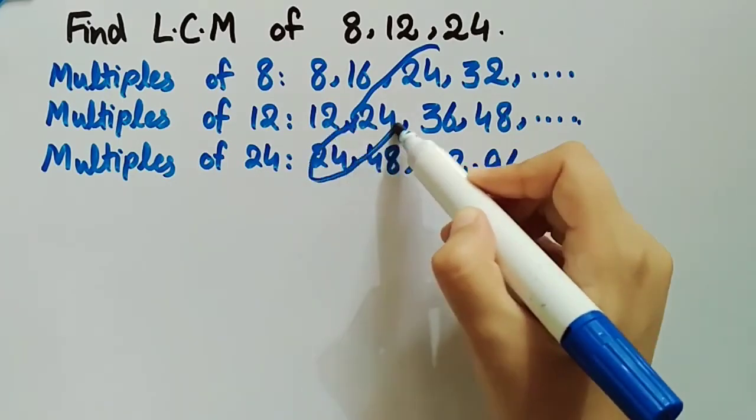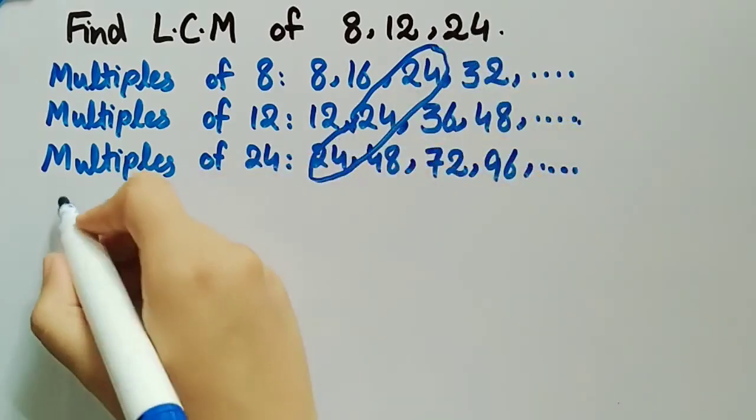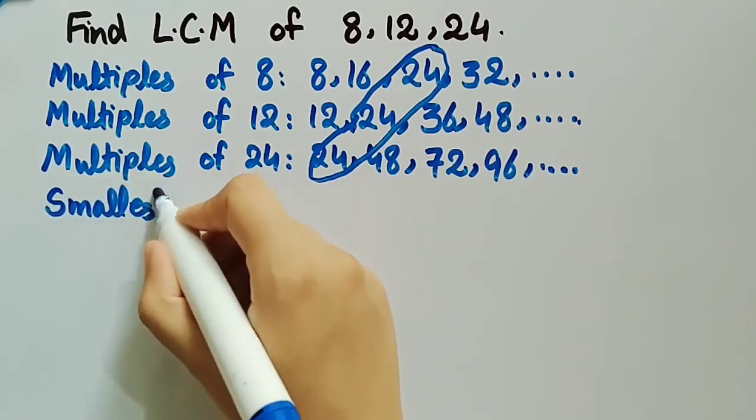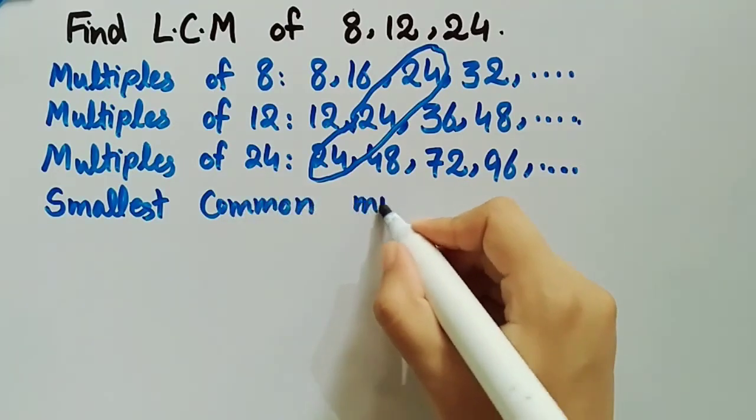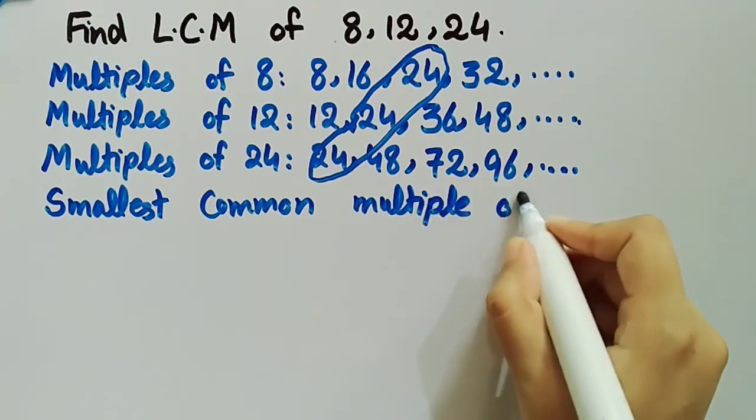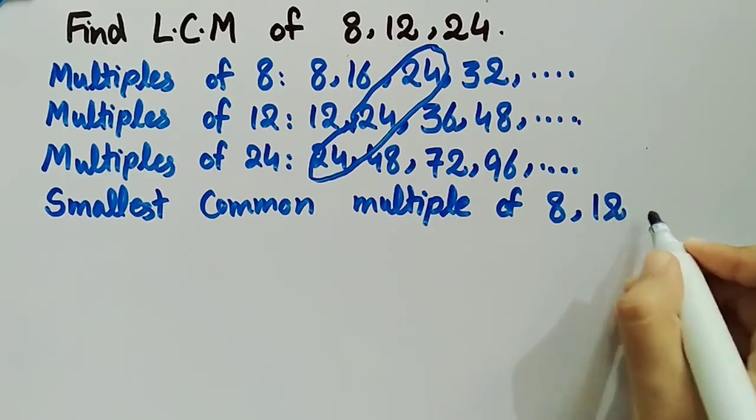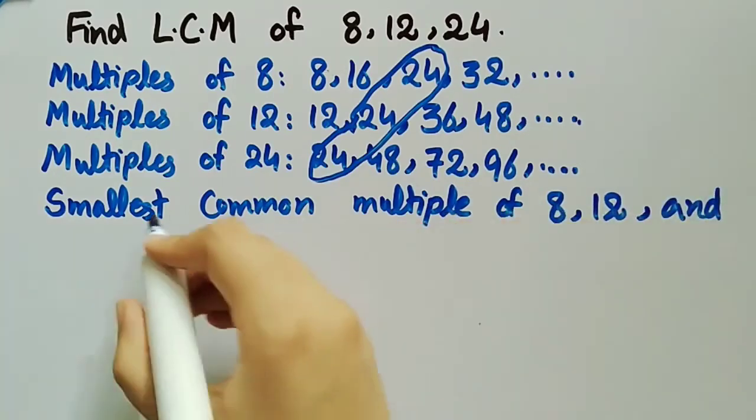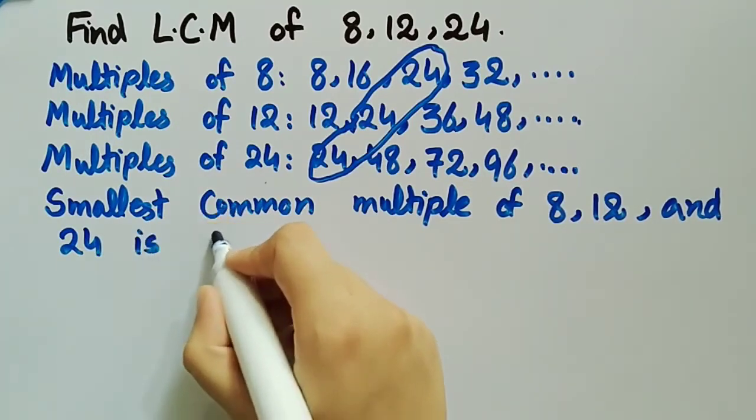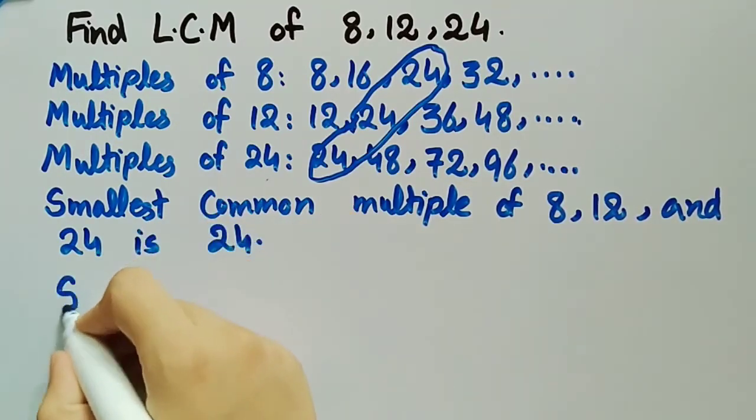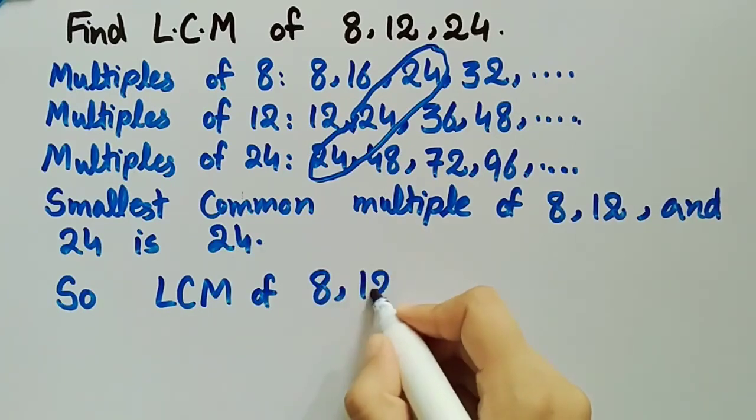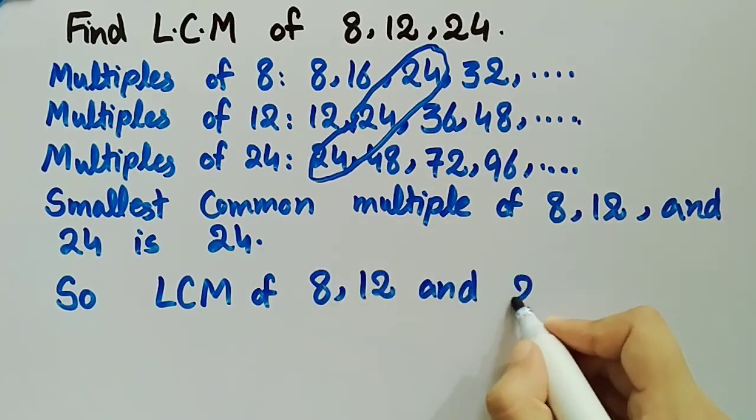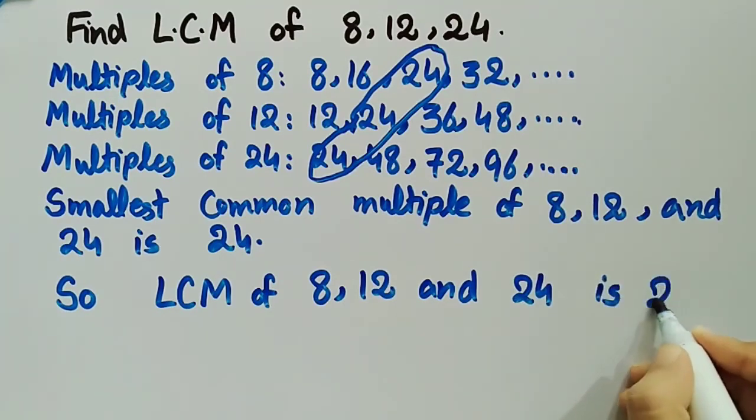This is their smallest common multiple, so we will write smallest common multiple of 8, 12, and 24 is 24. So LCM of 8, 12, and 24 is 24. In this way you can find LCM of any three numbers.